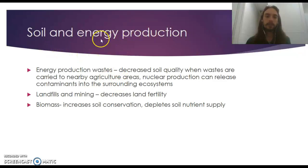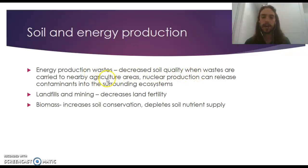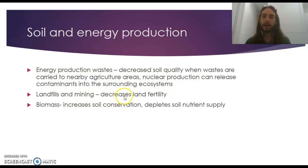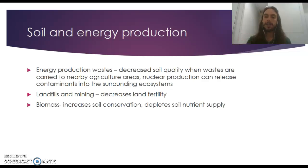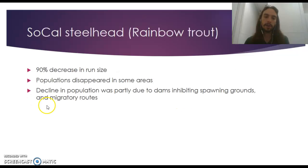Soil and energy production is another major concern. Energy production wastes decrease soil quality when carried to nearby agricultural areas. Nuclear production can release contaminants into surrounding ecosystems. Landfills and mining decrease land fertility. Biomass increases soil conservation but can deplete soil nutrient supply — for example, a single biomass crop can use up all the nitrogen in the soil, requiring fertilization and leaving excess phosphorus in the system.